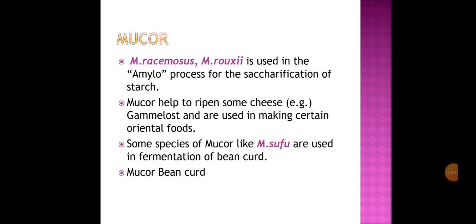The next fungi is Mucor, which includes species like Mucor racemosus and Mucor roxii, known to be used in the amylo process for the saccharification of starch. Mucor helps to ripen some cheeses like gamelost and is also used in making certain oriental foods. Some species like Mucor sufu are used in fermentation of bean curd, known as Mucor bean curd.